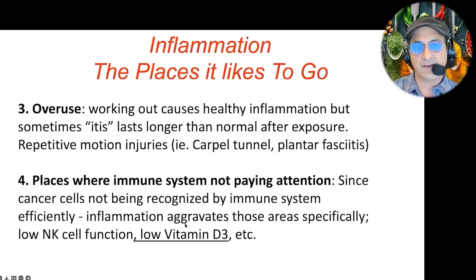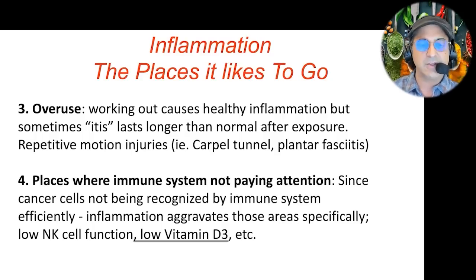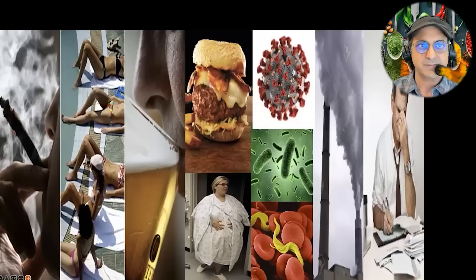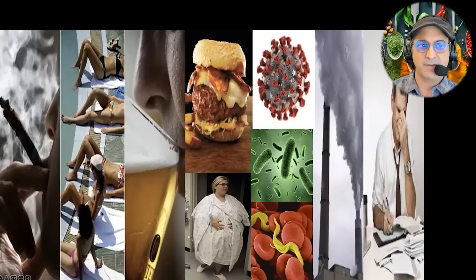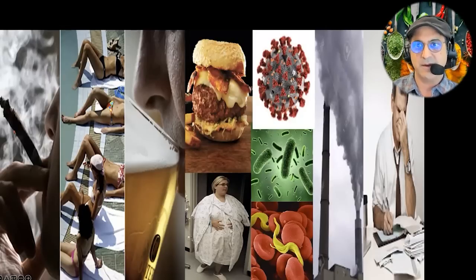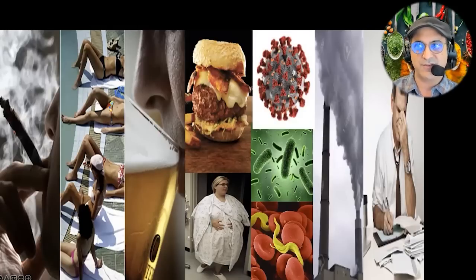Vitamin D is super simple — it's something that everybody should be taking on some level. You should have your levels tested and be between 60 and 100 on the test to get the optimum immune benefits. There are triggers of inflammation including smoking, solar radiation, alcohol, the standard American diet, obesity, viruses from the pandemic, bacteria, parasites, pollution, and stress — which all of us have undergone a lot of lately. These all contribute to inflammation.